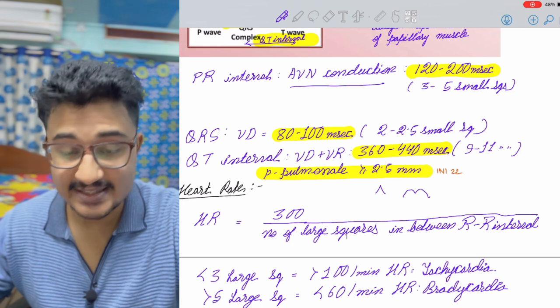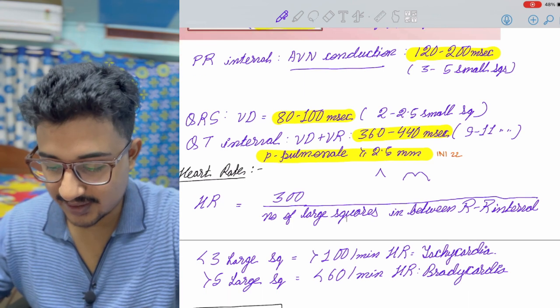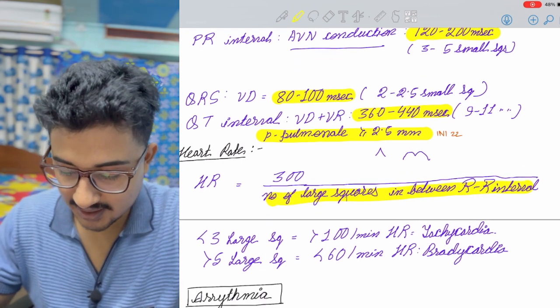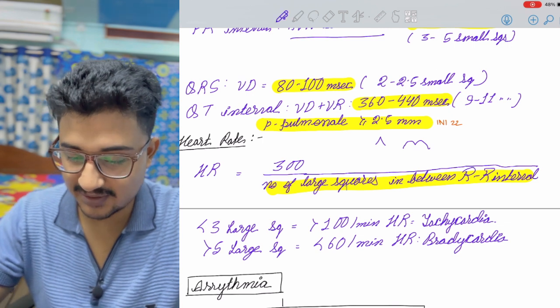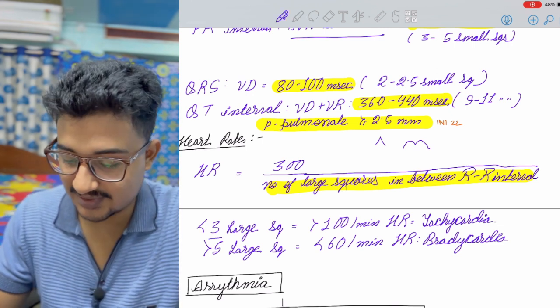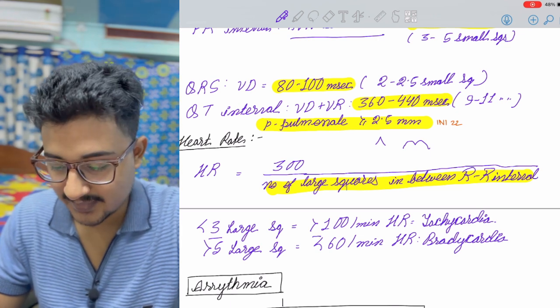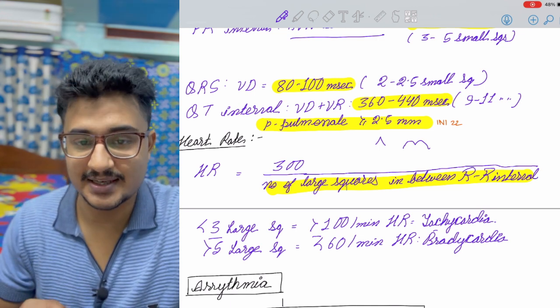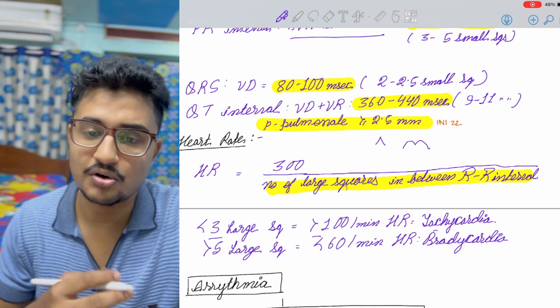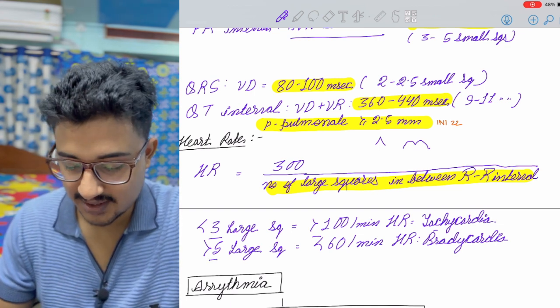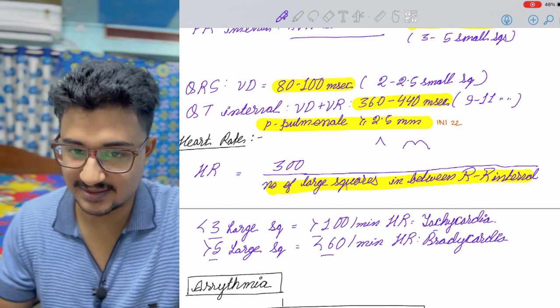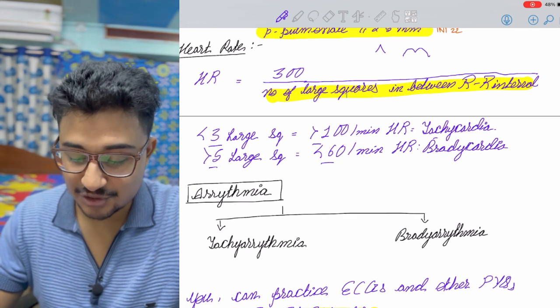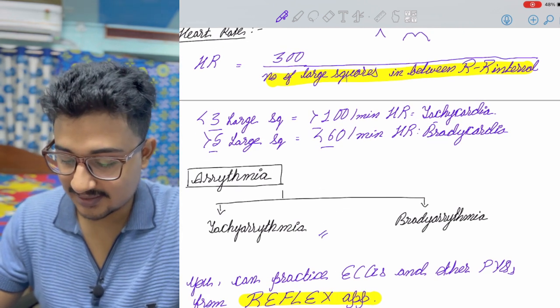First thing that you have to calculate is the heart rate. Simplified formula is 300 divided by the number of large squares between the R-R interval. More simplified approach: if it is less than 3 large squares, then the heart rate is greater than 100 per minute, so it is tachycardia. If it is more than 5 large squares, the rate is less than 60. Now coming to the approach to arrhythmia, arrhythmia is of two types: tachyarrhythmia and bradyarrhythmia.